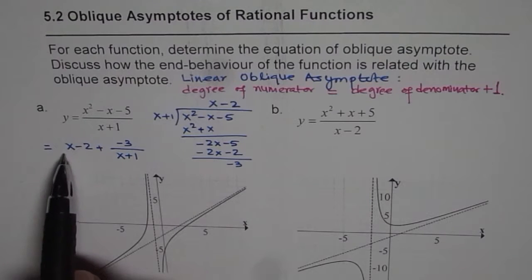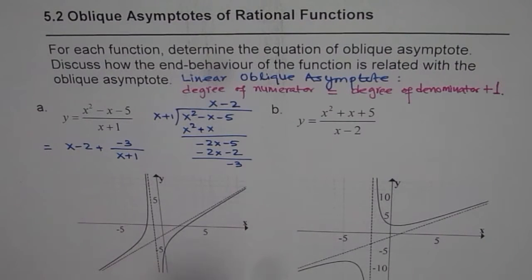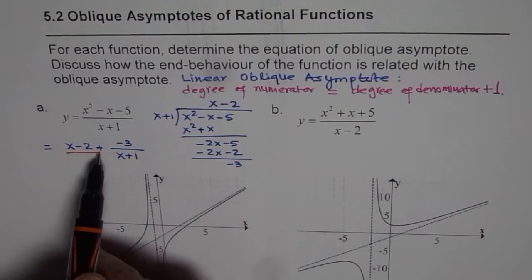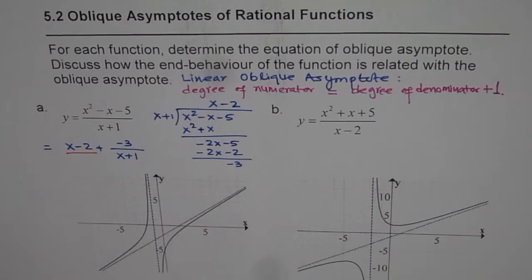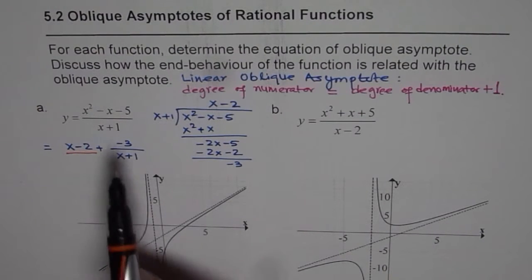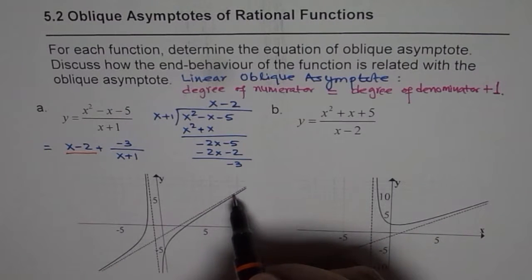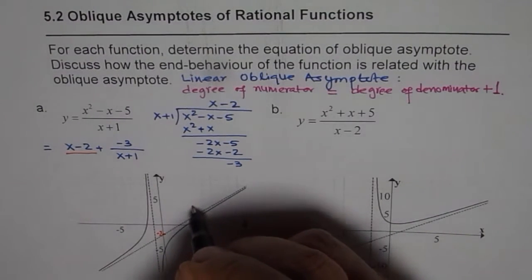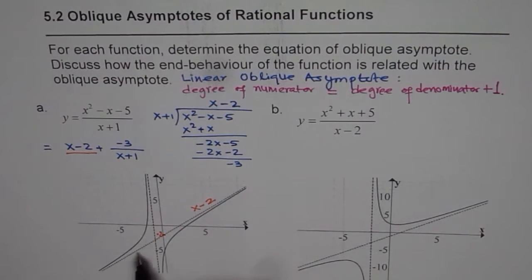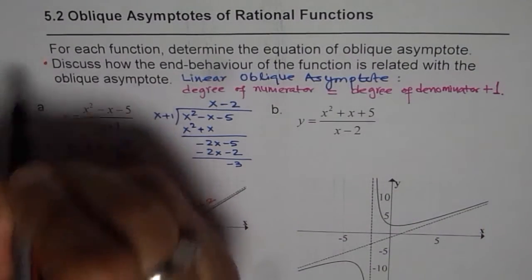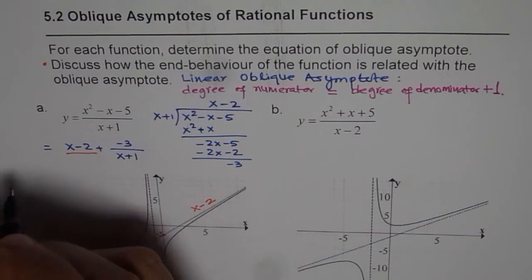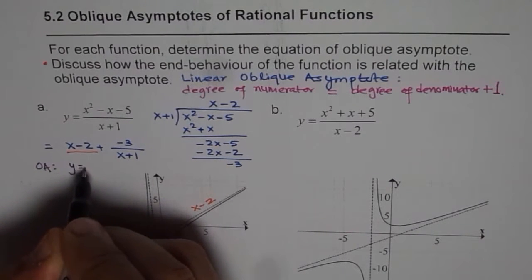The rational function has been written in two parts: one forms a linear equation and the other is the remainder term. The linear part, x - 2, is the oblique asymptote. The rational function equals the line plus something extra. The equation of the oblique asymptote is y = x - 2, which has a y-intercept of -2 and a slope of 1.